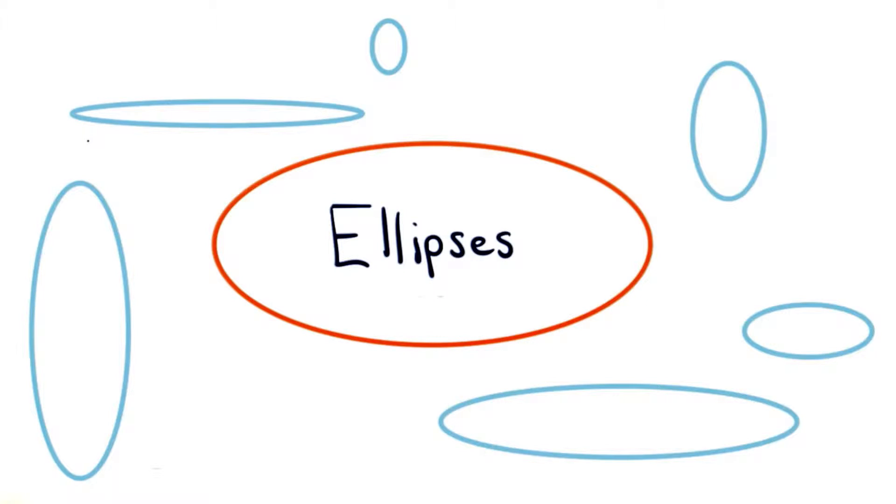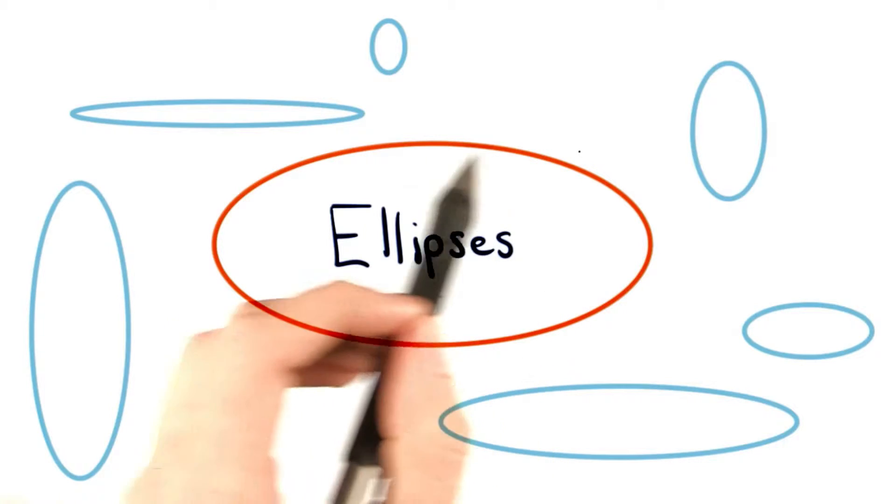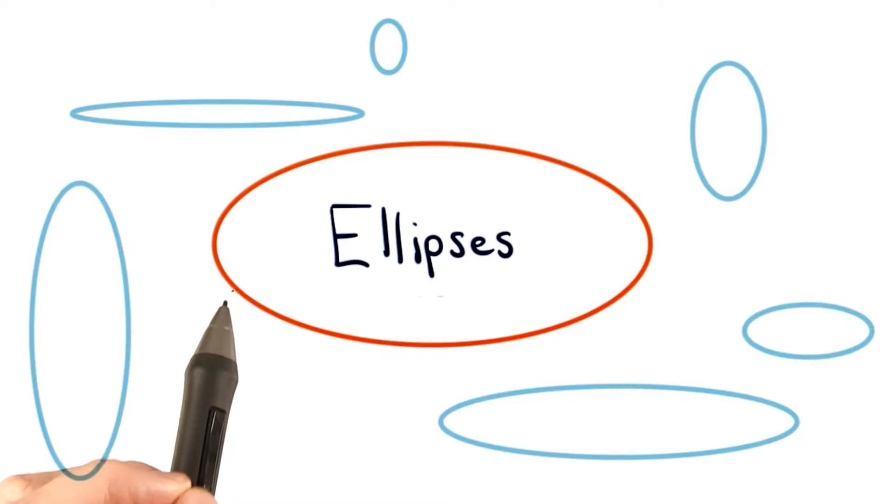We've looked closely at circles, so now let's examine ellipses. Ellipses are very much like circles. There's just one exception.